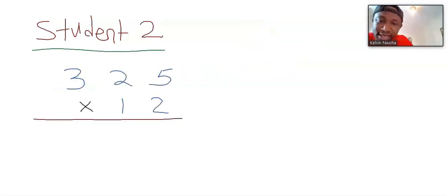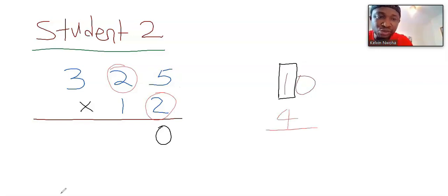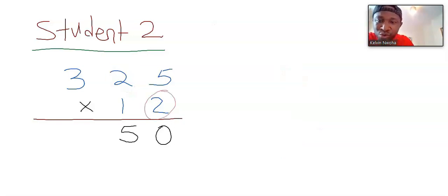Next, this is student 2. 2 multiplied by 5 is 10. You write 0 here. Then you keep this one. Next, 2 multiplied by 2, you are going to get 4. Add it to this one and you are going to get 5. I will write 5 here. Next, 2 multiplied by 3, 6. You write the 6 here.